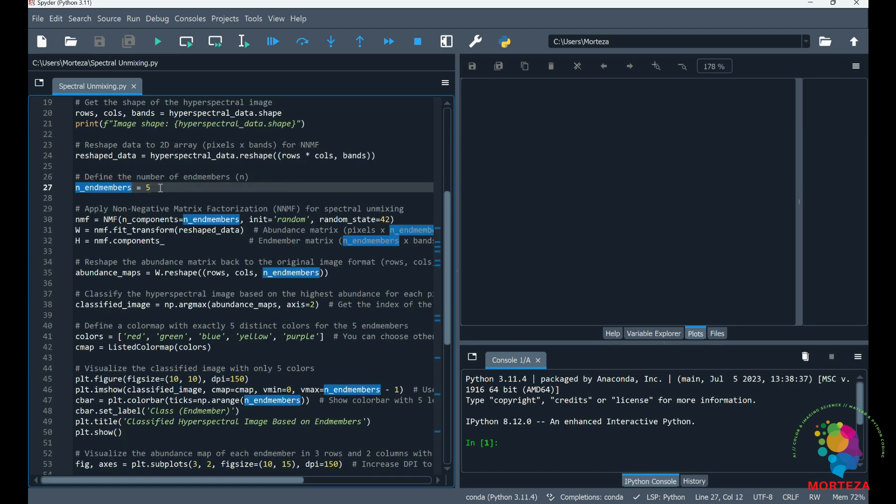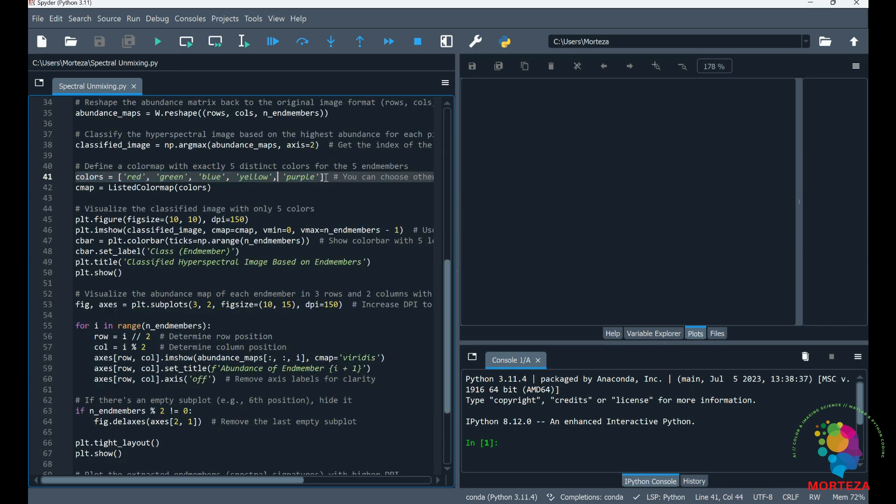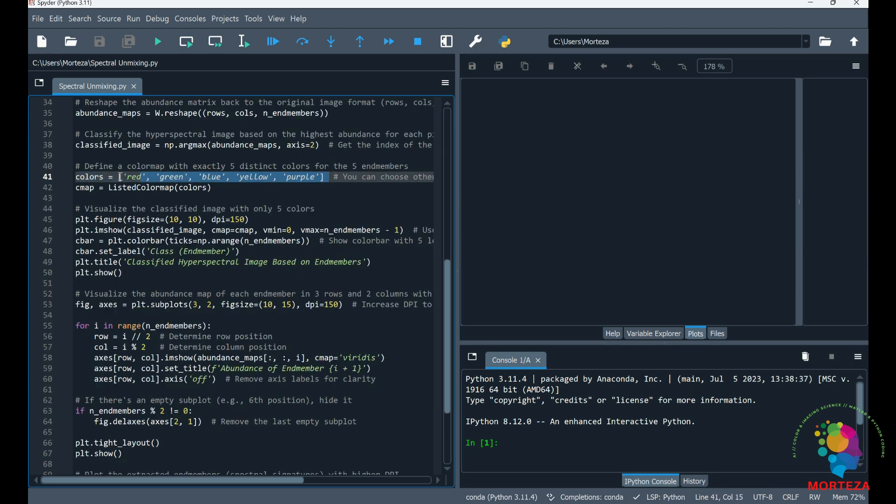So you got to know that I already specified the number of endmembers as 5. So if you know the number of distinct materials in your hyperspectral image, this could help, but I specified it as 5. And this is 5 different colors to show the classification map. And this is where I'm showing the result of the classification.